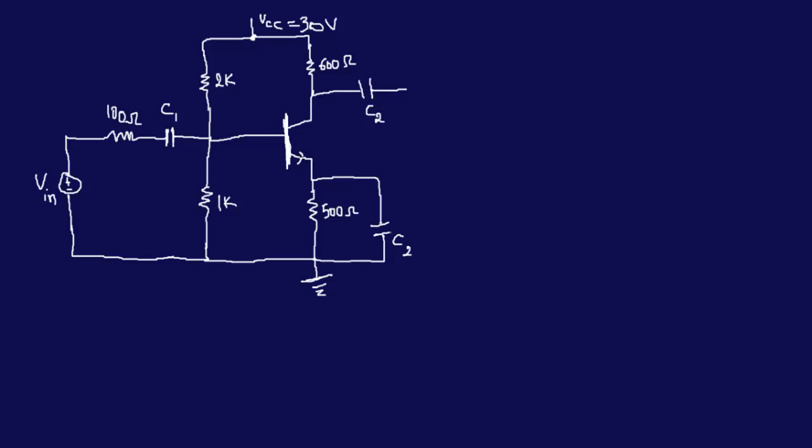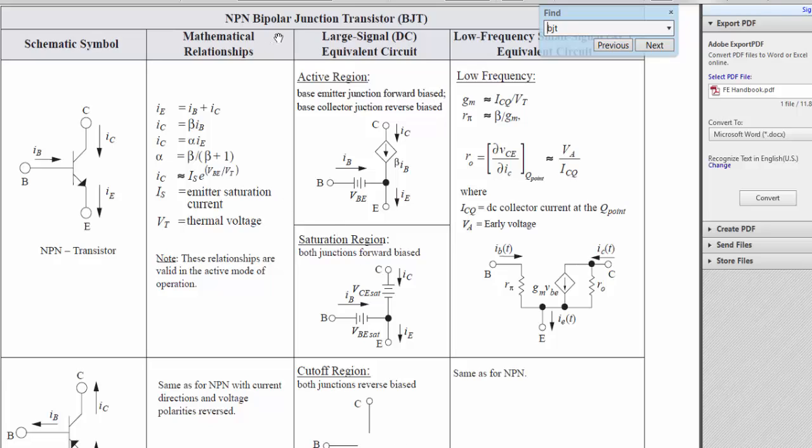Hello everyone. This particular problem was given to me by one of my subscribers — it's from the actual CBT NCEES practice exam, the EE practice exam. The question is to find the value of IC in milliamps. All the resistor and capacitor values are given. First, we need to find out what kind of transistor we're dealing with — BJT, MOSFET, or JFET — by looking at the configuration and comparing to the handbook. We can already tell this is an NPN BJT.